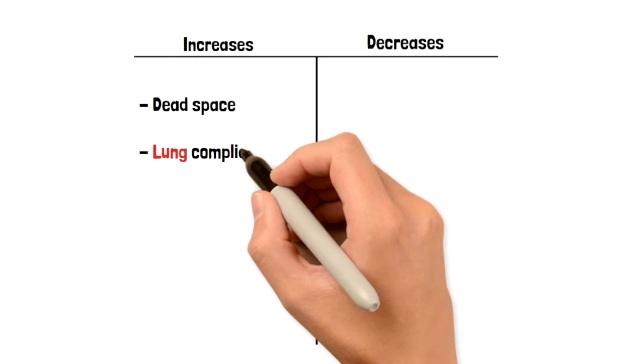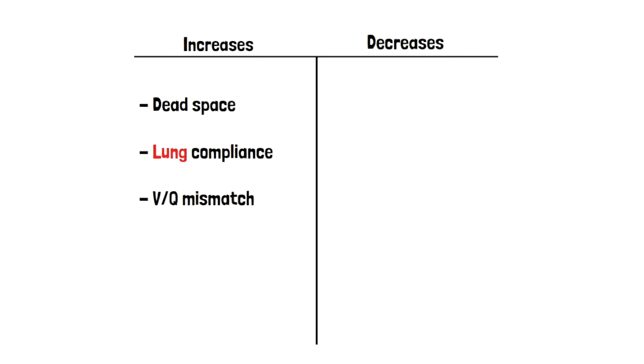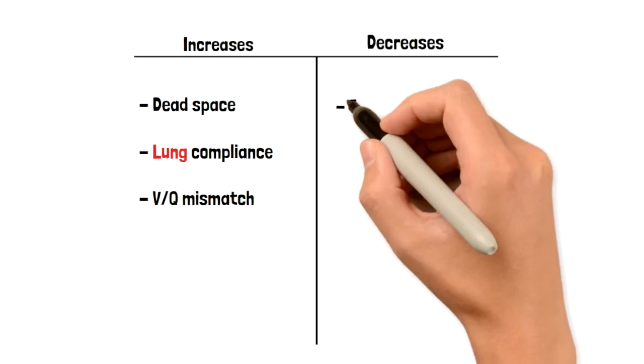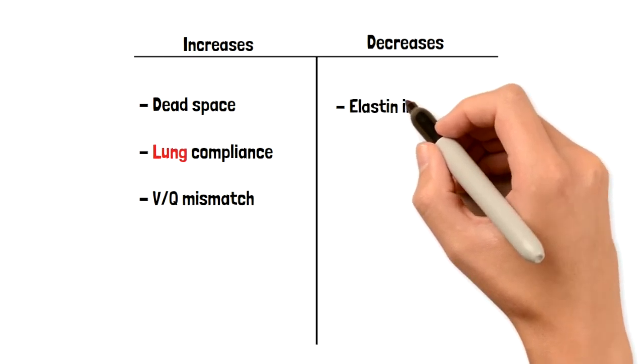Dead space - with each inhale, the amount of dead space will increase. Lung compliance will increase, which means your FRC will increase. This means you can inhale as much air as you can, but it's hard to exhale it out. And finally, VQ mismatch ratio - this will increase.